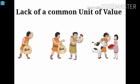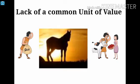The next difficulty is lack of a common unit of value. The main disadvantage of this barter system was the absence of a common unit in terms of which values of goods and services could be measured. For example, a horse cannot be measured in terms of rice. But if there is a common unit of value, it will set a particular amount for the horse and a different amount for the rice.